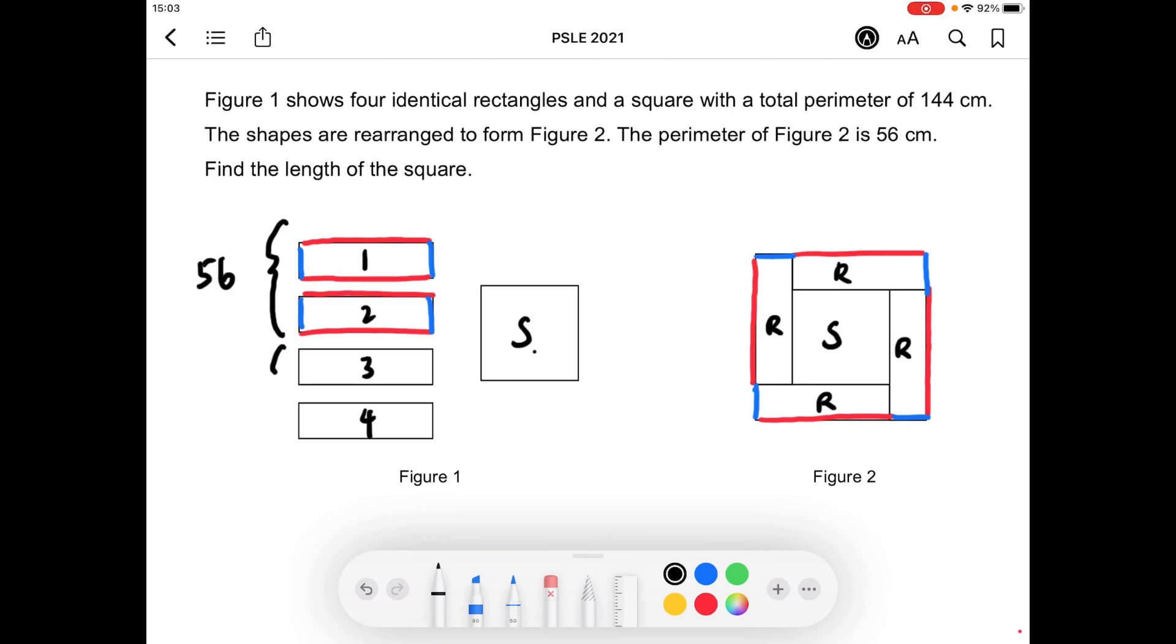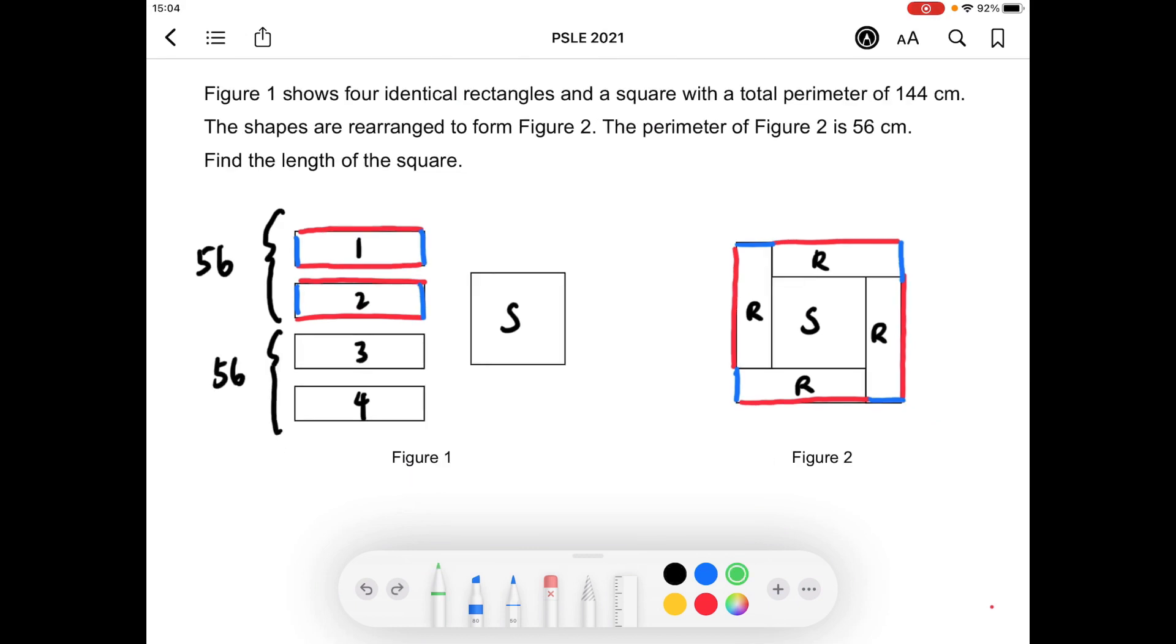As they are identical, these 2 rectangles will also have a perimeter of 56 cm. Given the total perimeter of Figure 1 is 144 centimeters, we can take 144 - 56 - 56 to find the perimeter of the square.